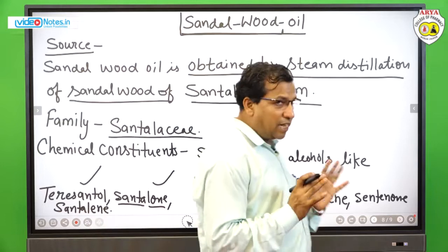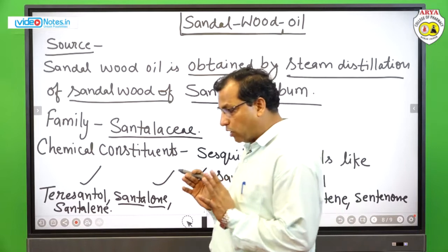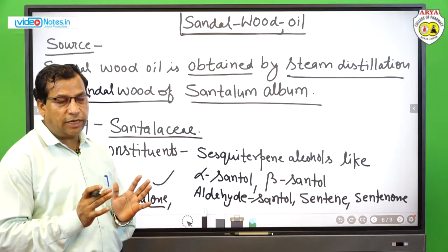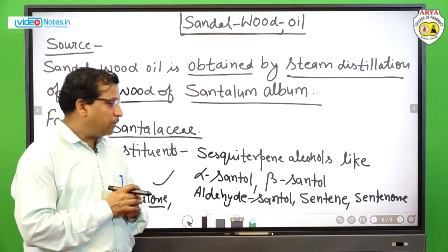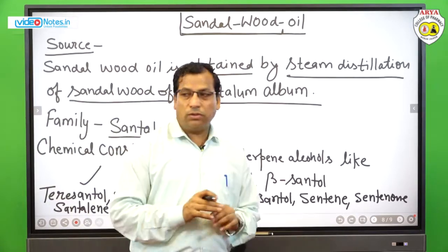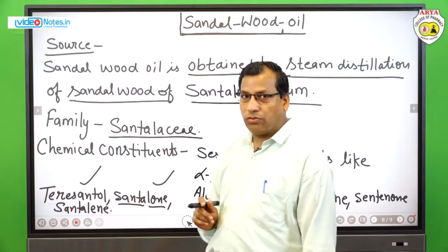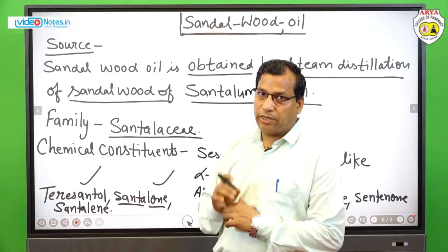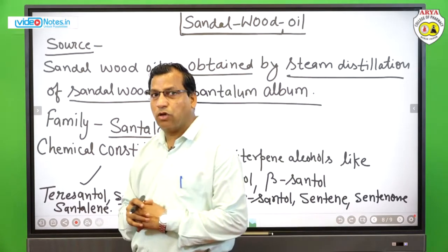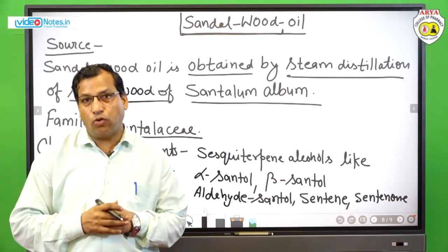To summarize the chemical constituents of sandalwood oil: sesquiterpene alcohols are the most abundant, with alpha-santalol and beta-santalol as the main constituents. Aldehyde santalol, santene, santenon, teresantalol, santalon, and santalene are found in trace or minute quantities in sandalwood oil.